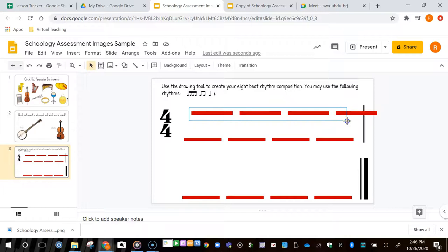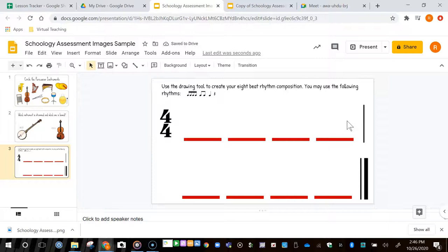Now that I have the example the way I want it for my students, I'm going to go to File, Download, and it's going to give me the file type options.